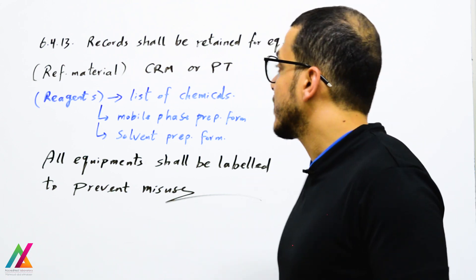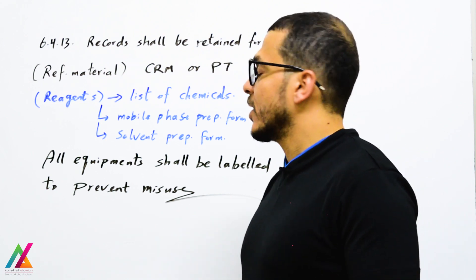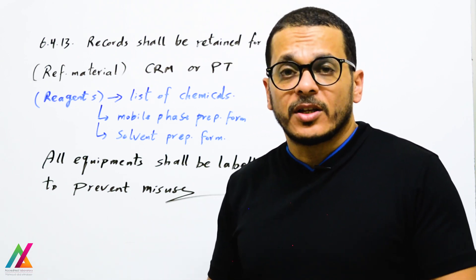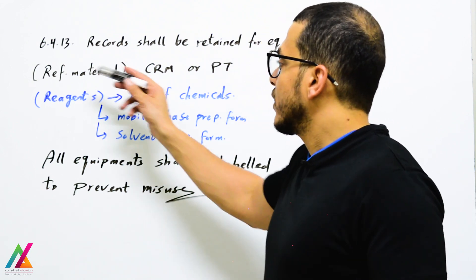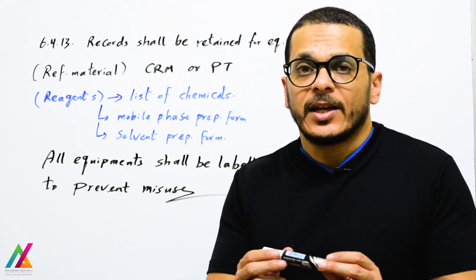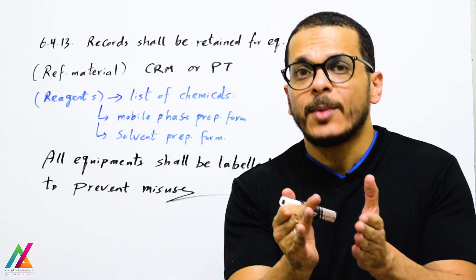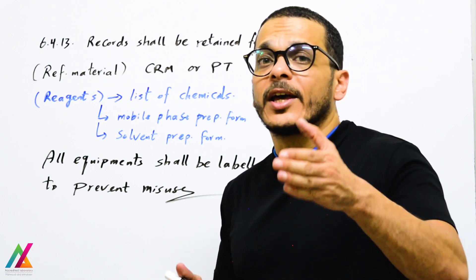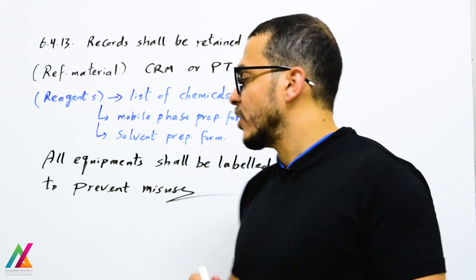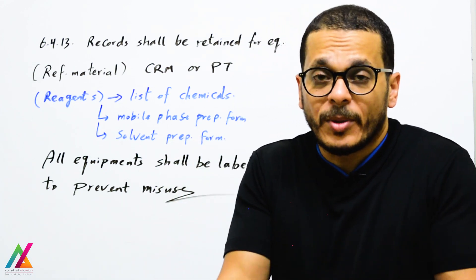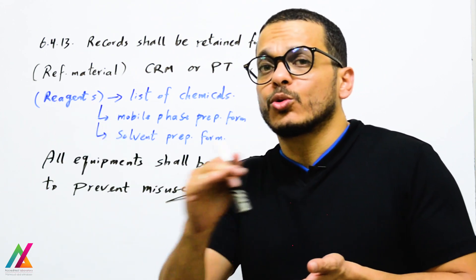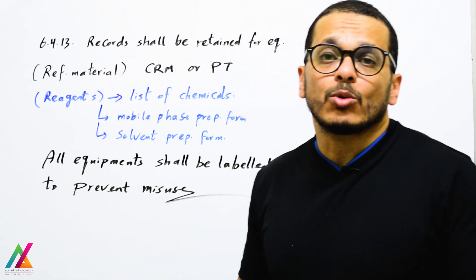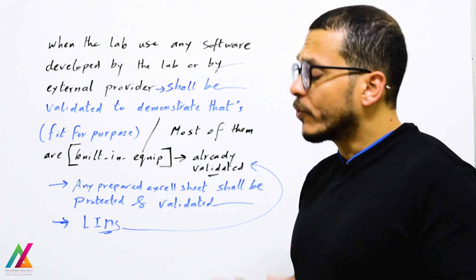Label all prepared standards clearly for everyone, including: name of the standard, preparation date, expiry date, preservation temperature, and initials. Reference materials such as CRM or PT samples are also considered equipment in the new edition — CRM providers shall meet ISO 17034 and PT providers shall meet ISO 17043. For reagents, maintain a list of all chemicals received including receiving date and expiry date. Prepare a mobile phase preparation form and a solvent preparation form for any solvents prepared in the lab.